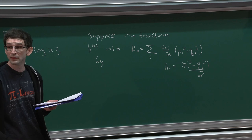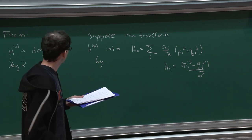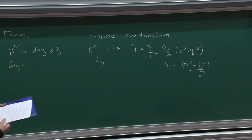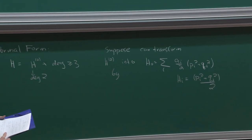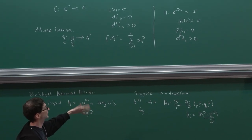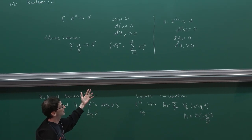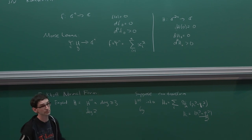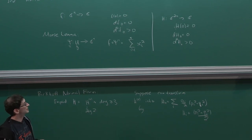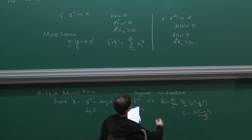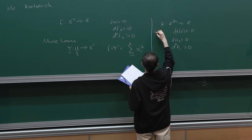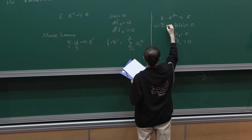What is the condition on H? Basically I want the value of H at 0 to be 0, the derivative to vanish, and the Hessian matrix to be non-degenerate. So it's any function. The symplectic form is the standard one. I'm looking at formal transformations that preserve the symplectic form — H doesn't need a compatibility condition with the symplectic form, it's just any function.